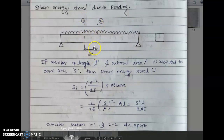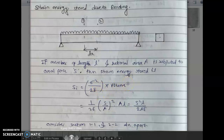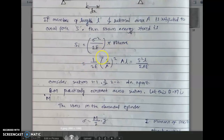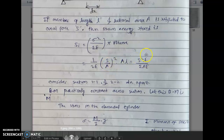The two sections are a distance dx apart and the total length is small L. If a member of length L and section area A is subjected to axial force S, then strain energy stored is equal to sigma squared upon 2E into volume. Since sigma equals S upon A, this gives strain energy equal to S squared·L upon 2E.